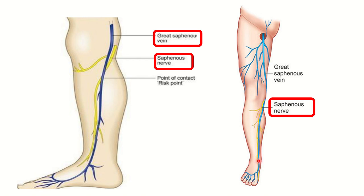close to the medial malleolus and ascends upward. At the knee it goes somewhat posteriorly into the popliteal fossa area, then comes back anteriorly to the thigh. Finally, in the upper part, it opens into the femoral vein at the saphenofemoral junction. We can see a nerve that is very close to the great saphenous vein.